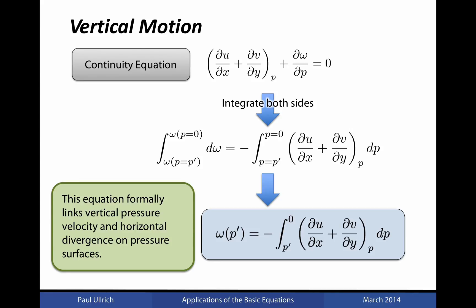In order to do so, we're going to start with the kinematic method of diagnosing the vertical pressure velocity. Recall that this method starts with the continuity equation on pressure surfaces in the form shown here. If we integrate both sides of this expression from a pressure level p' to the top of the atmosphere, that is at p equals zero,